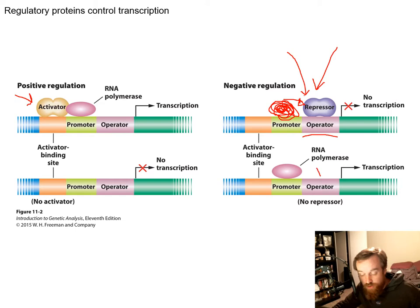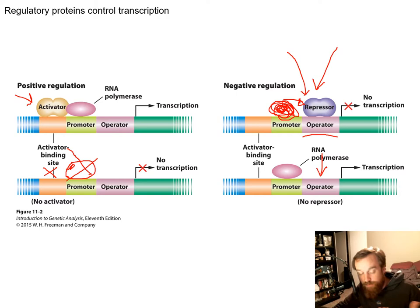If the repressor is removed, RNA polymerase is able to access the gene — that's how the repressor works. Activators work in the opposite way: normally, if there is no activator bound upstream, this polymerase is not being recruited to that promoter site. When the activator is present, it helps bring RNA polymerase to the promoter and allows transcription to happen.